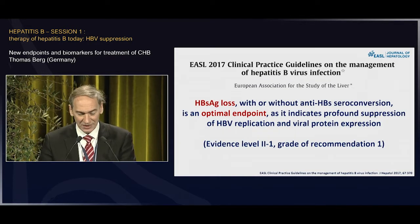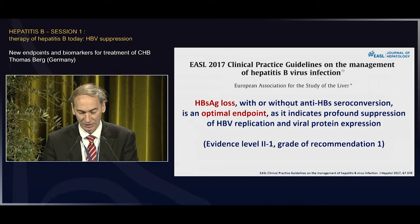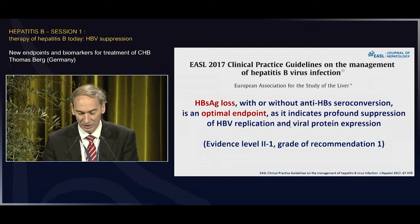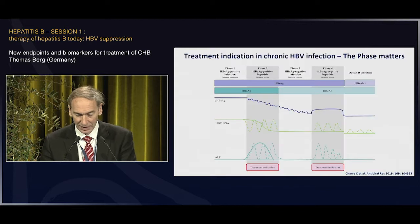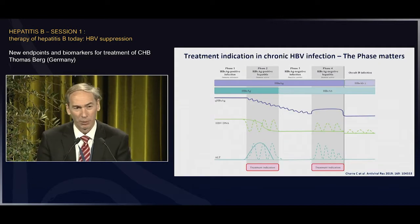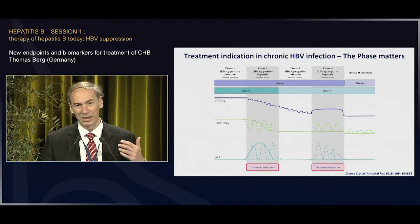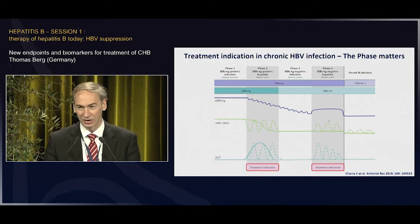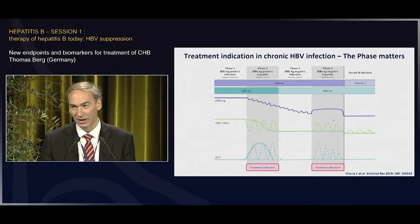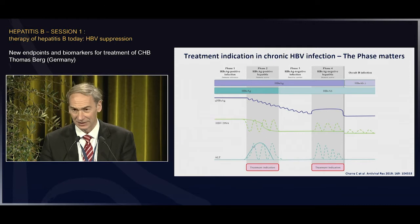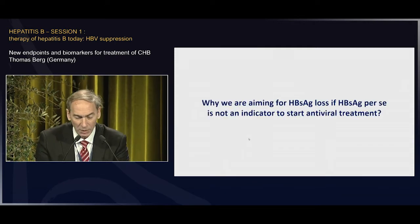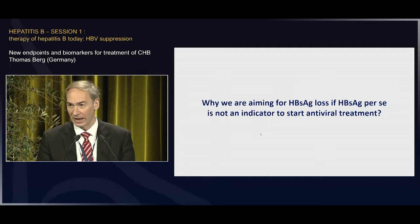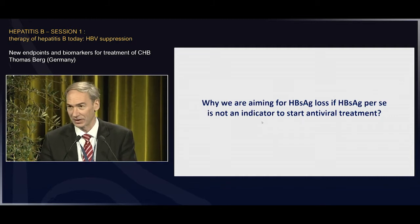In the 2017 guideline, it's already written that HBsAg loss is an optimal endpoint, because it indicates a profound suppression of HBV replication and viral protein expression. However, you may raise the point that there's probably some inconsistency in this argumentation, because our treatment indication is not based on HBsAg — it's based on the phases of the chronic infection and disease activity markers like HBV DNA and ALT.